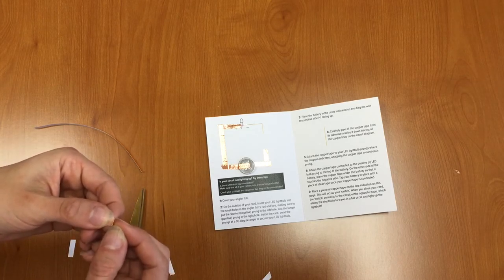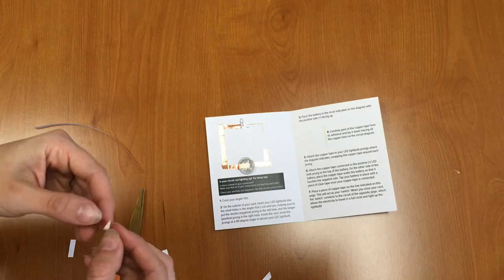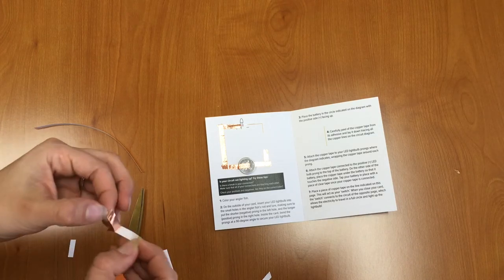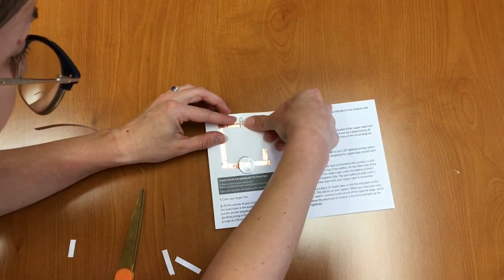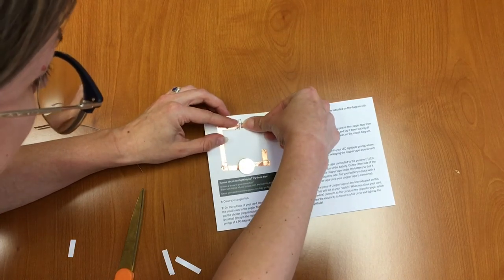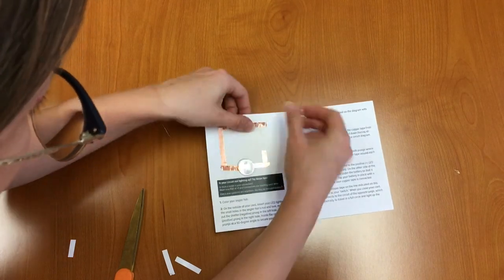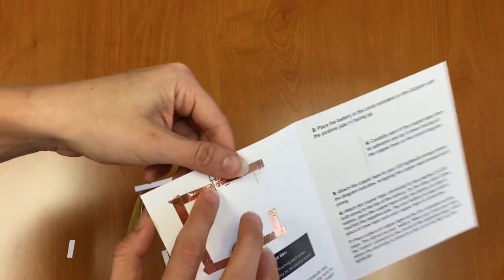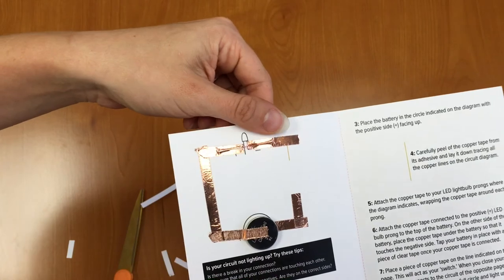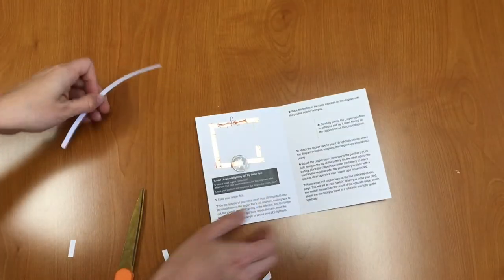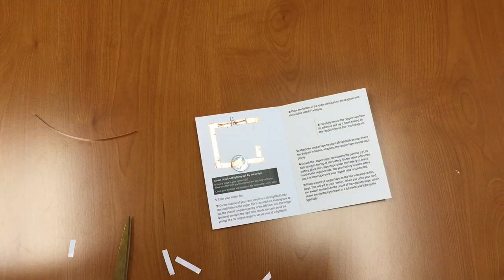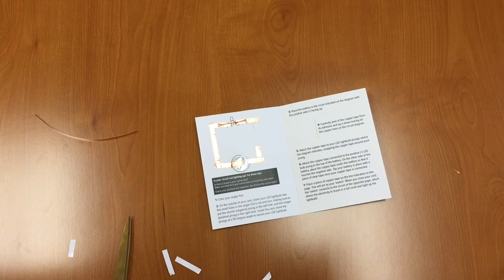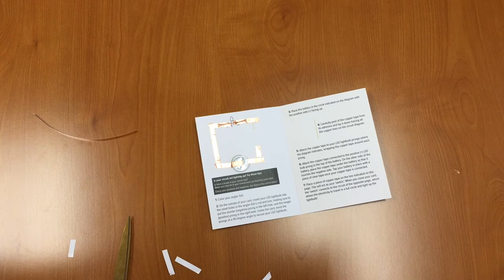Again, making sure to overlap. Sometimes this copper tape can be kind of tricky to get off of its backing, but if you have nails it makes it a little bit easier, or you can ask an adult who has nails. So notice how I'm leaving a little gap. I'm leaving a little gap between my copper tape right there. You should leave that gap as well. And one more piece on this side. Again, making sure to overlap.